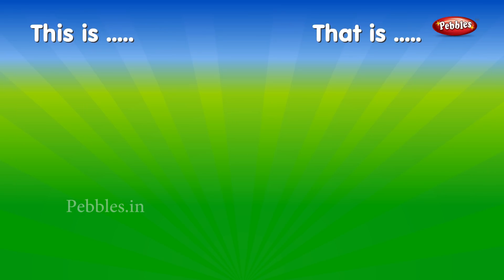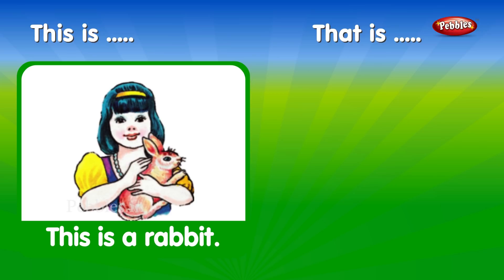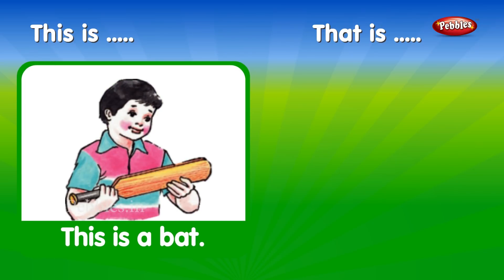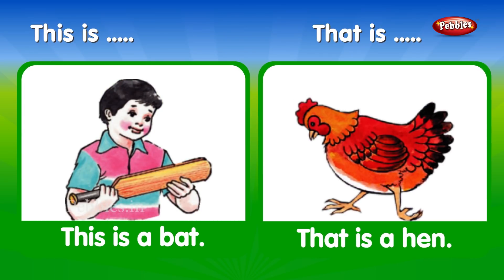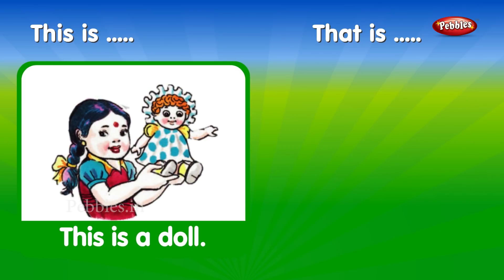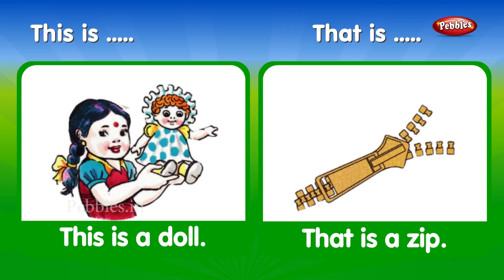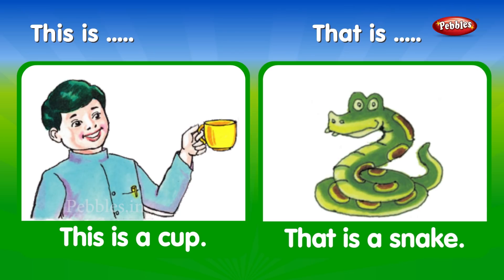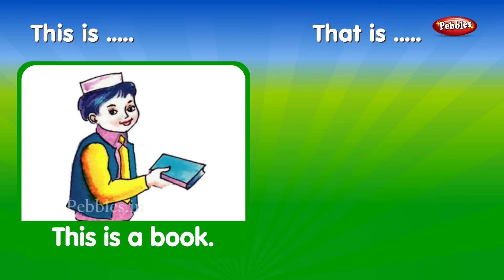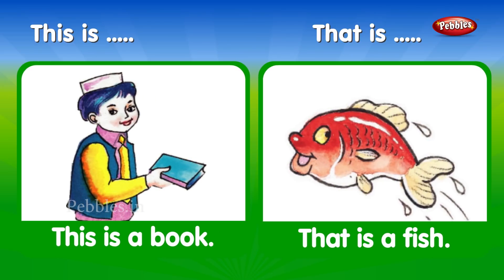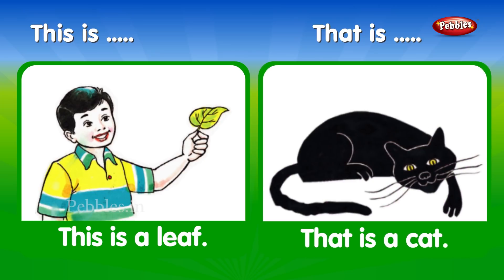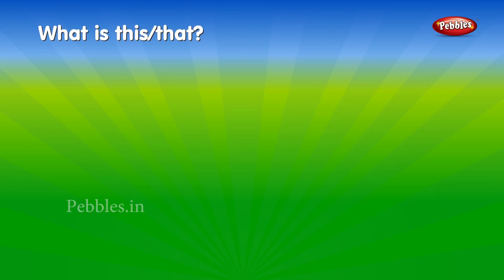This is. That is. This is a rabbit. That is a kite. This is a bat. That is a hen. This is a doll. That is a zip. This is a cup. That is a snake. This is a book. That is a fish. This is a leaf. That is a cat.